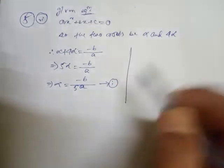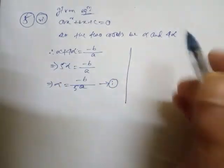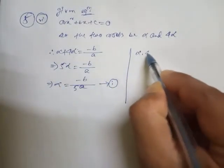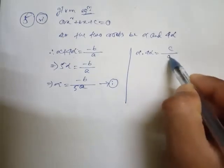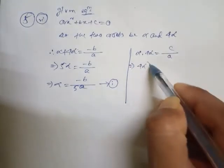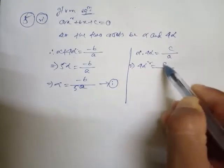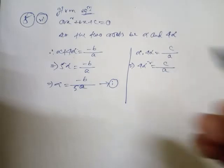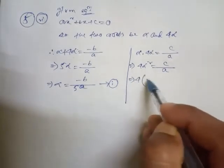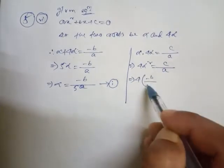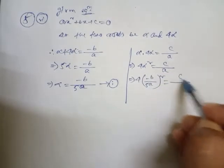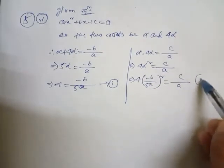Now the product of the roots: alpha into four alpha equals c by a, so four alpha² equals c by a. The value of alpha is minus b by 5a, so we substitute that here.